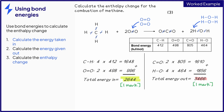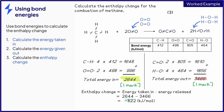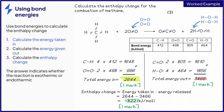To calculate the enthalpy change, the energy released is taken away from the energy taken in. This gives us a total enthalpy change of minus 822 kilojoules per mole, which will score the final mark. In this case, we have achieved a negative answer. The enthalpy change for an exothermic reaction is negative, so this reaction is exothermic. A positive answer would have indicated an endothermic reaction.